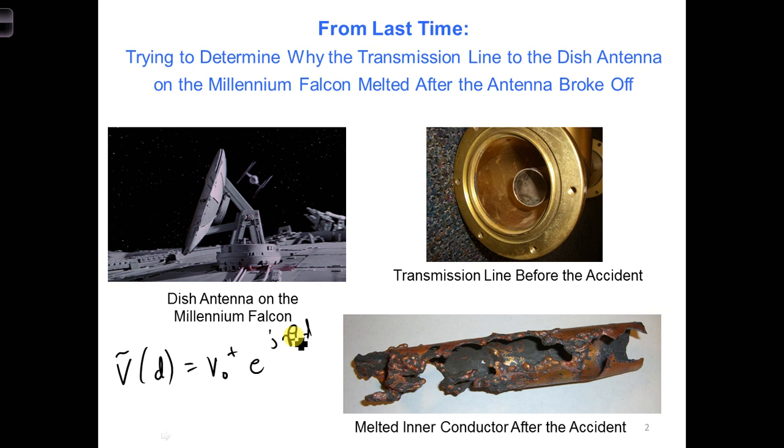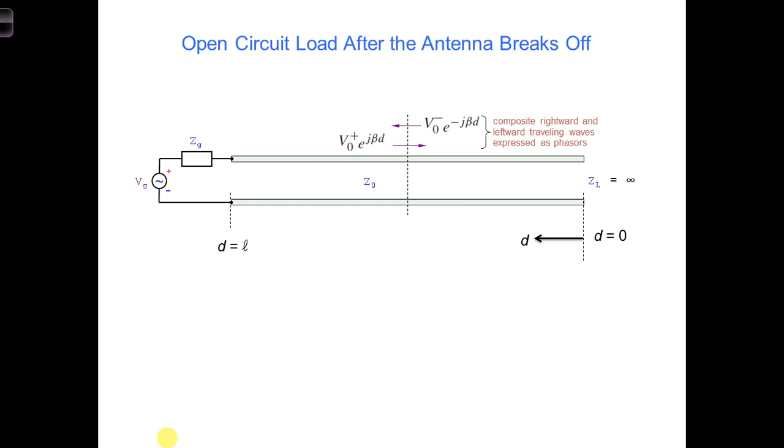Now let's look more closely at what happened on the transmission line when the antenna load broke off. When the antenna broke off, there was suddenly an open circuit at the end of the transmission line. In this case, ZL is infinity.